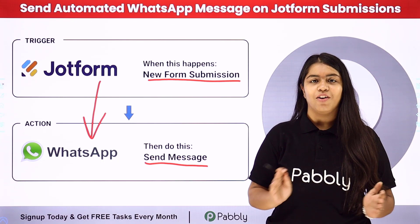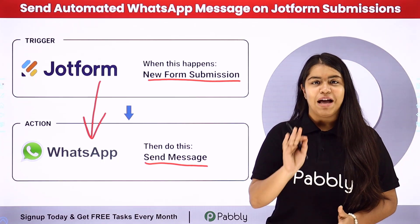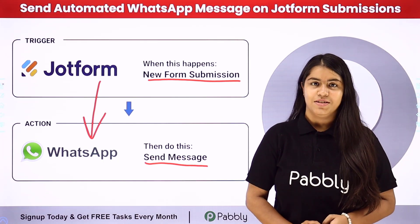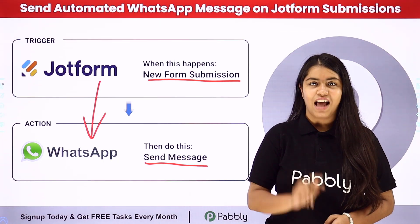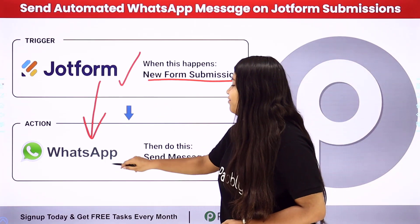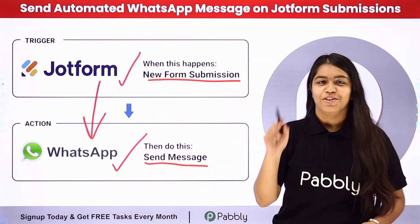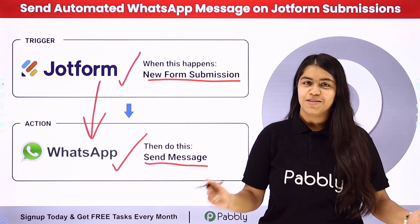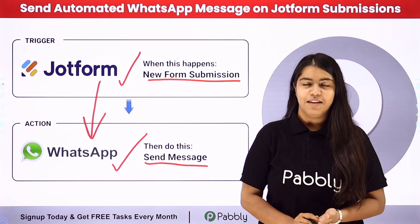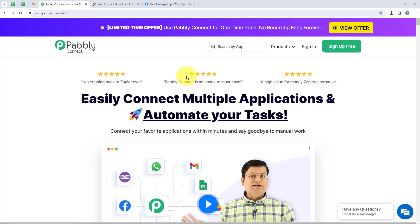Pabbly Connect is an amazing automation software. In Pabbly, we have two concepts: Trigger and Action. For Trigger, we are going to use JotForm and for Action, we are using WhatsApp. So if you want to learn this process step by step, follow me through the screen. Welcome to my screen.